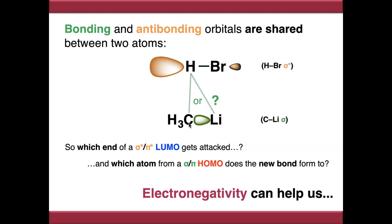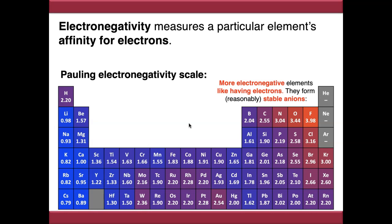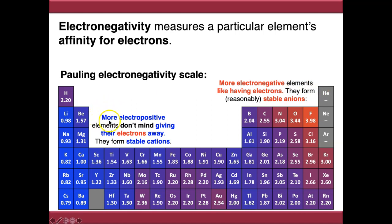Electronegativity can help us here. A Pauling electronegativity periodic table assigns each element a score — the higher the score, the more electronegative the atom. More electronegative elements like having electrons; fluorine in the top right corner is the most electronegative. Conversely, less electronegative or more electropositive elements don't mind giving away electrons. This imbalance causes what is called polarization, which allows us to predict reactivity.